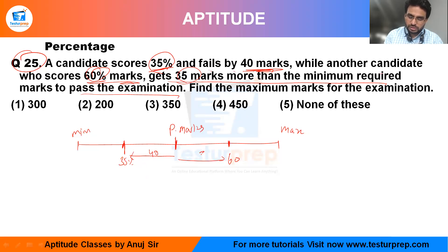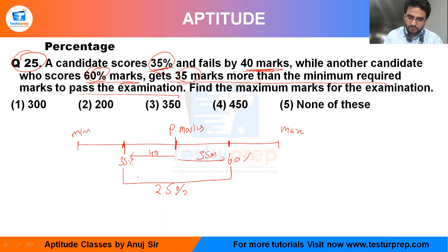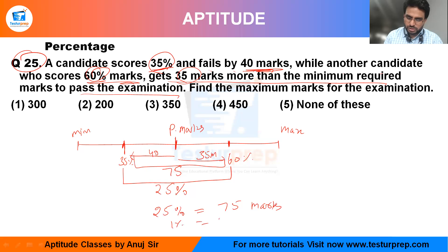The percentage gap between them is 60 minus 35, which equals 25 percent. The difference in their marks is 35 plus 40, which equals 75. So 25 percent equals 75 marks, meaning 1 percent equals 3, and 100 percent equals 300 marks total.